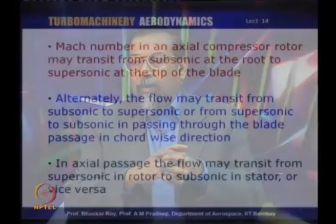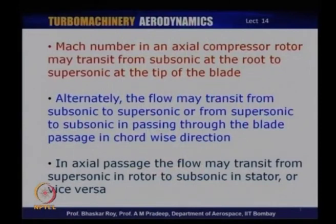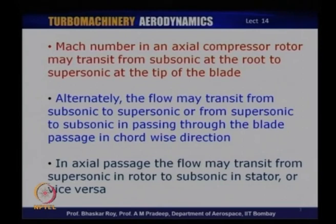Another way to define a transonic compressor is that the flow may actually be supersonic near the tip of the blade but subsonic near the root. The relative Mach number at the rotor is a combination of absolute Mach number and rotating speed, and this combination is highest at the tip — which may go supersonic — while at the root it may remain subsonic. This spanwise transition is also referred to as a transonic blade.